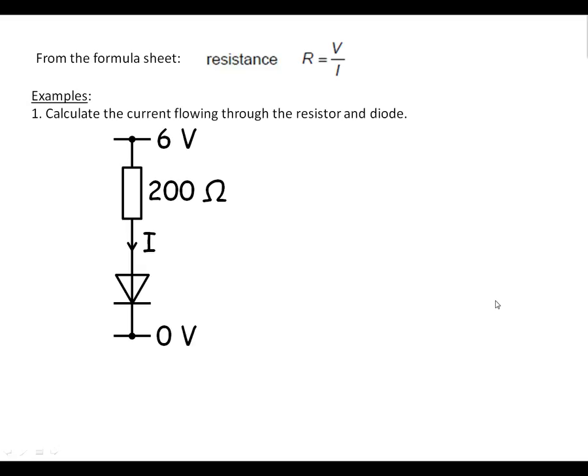Okay, first example. We're going to calculate how much current we've got going through the resistor and the diode. First thing to note on this one is the diode. We get 0.7 volts across it. Therefore, we know that we've got 6 volts at the top here, 0.7 volts at the bottom.